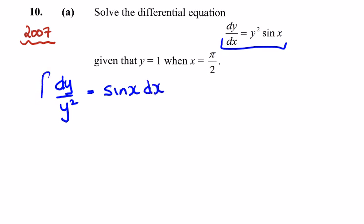Now we need to integrate these. And we're told that y is equal to 1 when x is equal to pi over 2, which you may write as 90 degrees into your calculator.